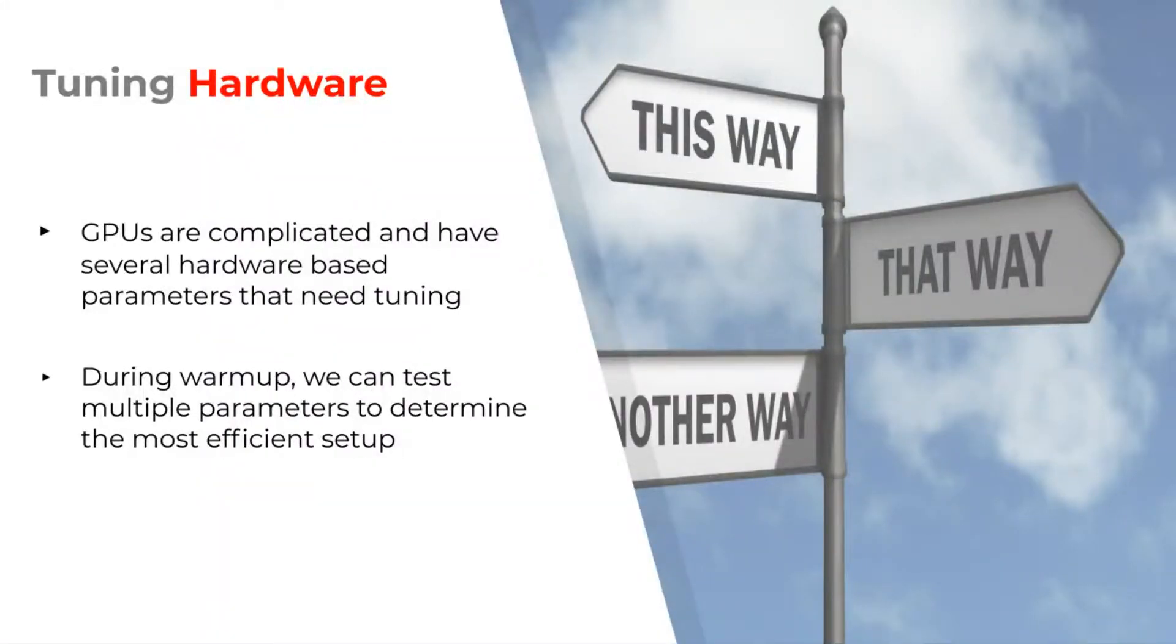And the same applies to tuning the implementations themselves. Because computational hardware such as GPUs differ in architecture so much, each GPU might have a different optimal way of subdividing the overall workload and distribute it among the GPU's computational units.